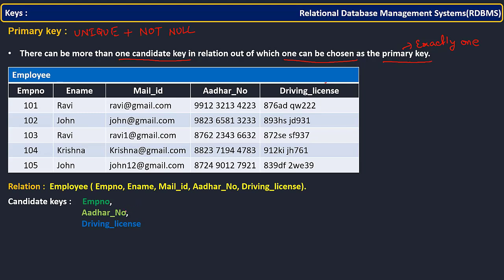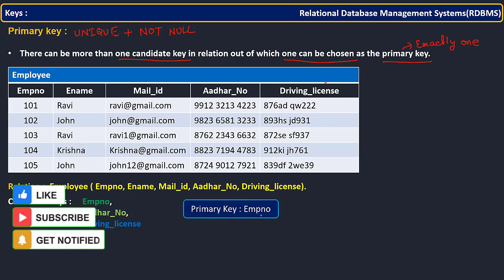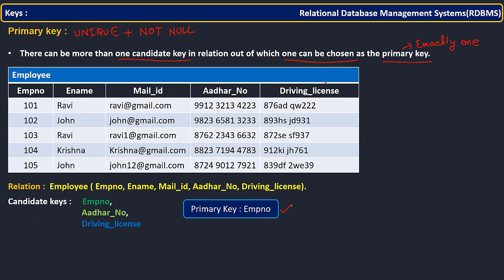For example, in a company, using Aadhar number for identification can be tedious, and the same with driving license. So it is better to use the employee number ID they have. If you select that as a primary key, then you have a lot of flexibility. That is what — out of all candidate keys, whichever is flexible for us, we select as a primary key. In this scenario, we selected EMP number as a primary key.